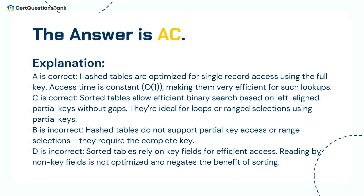The answer is A and C. A is correct: hashed tables are optimized for single record access using the full key — access time is constant O(1), making them very efficient for such lookups. C is correct: sorted tables allow efficient binary search based on left-aligned partial keys without gaps; they're ideal for loops or ranged selections using partial keys. B is incorrect: hashed tables do not support partial key access or range selections — they require the complete key. D is incorrect: sorted tables rely on key fields for efficient access; reading by non-key fields is not optimized and negates the benefit of sorting.